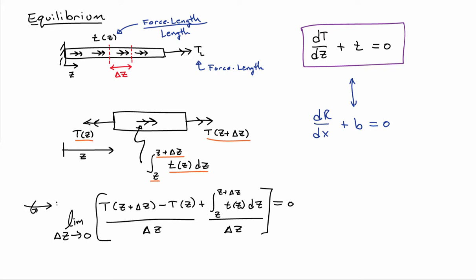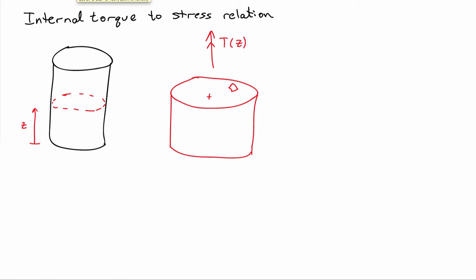Now, when we did look at the axial force problem, we also had a relationship between the internal force, capital R, and the stresses on the cross section. So let's go ahead and get that relationship also for the torque in this case. Let me consider a bar, and I'm going to slice it at some elevation z, and let me look at that surface. So on that surface, there's a resultant torque or moment of capital T at position z. And that resultant torque is related to the stresses that are acting on the cross section.